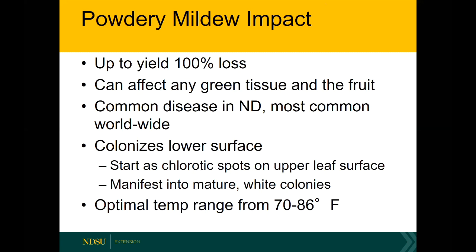Powdery mildew can affect any green tissue and the fruit. It's a very common pathogen — if you do any level of active gardening you've probably seen powdery mildew. It affects many plants: trees, turf, peonies, begonias. However, that species of powdery mildew is specific to each plant. The species you'll see on your grapes will not affect other plants in your yard. So you can manage powdery mildew on grapes just by spraying the grape plants — you don't need to spray any other plant in your yard.